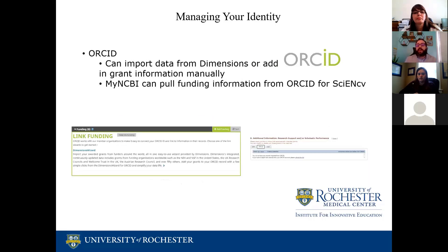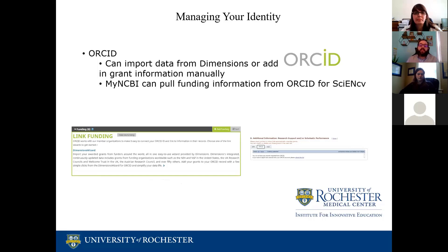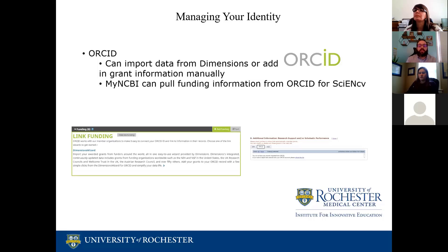I am also a fan of ORCID. As you consider how to best manage your scholarly identity, ORCID is the best way to organize and track your research activities. Using ORCID, you can search and link any grant information available through Dimensions, or manually add grant information not included there. You can also use My NCBI to import this data into your Science CV to use with your NIH biosketch — a requirement for all NIH and AHRQ grant applications. Keeping this information complete and up-to-date will strengthen your case when applying for grants, and using ORCID cuts down on redundant work across multiple platforms.